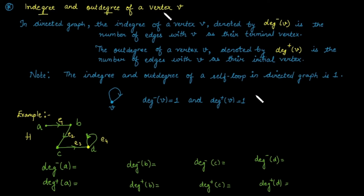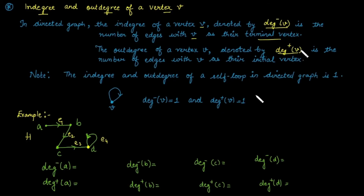Next is in-degree and out-degree of a vertex in a directed graph. The in-degree of a vertex v, denoted deg⁻(v), is calculated as the number of edges with vertex v as their terminal vertex. The out-degree of a vertex, denoted deg⁺(v), is calculated as the number of edges with vertex v as their initial vertex. Note that in a directed graph, a self-loop contributes one to both in-degree and out-degree.